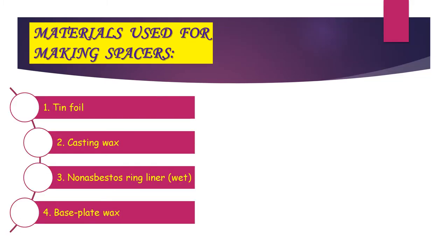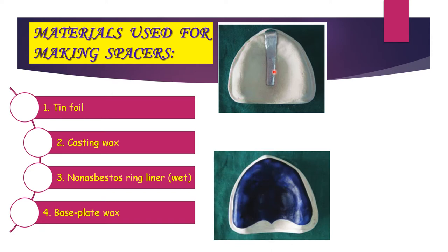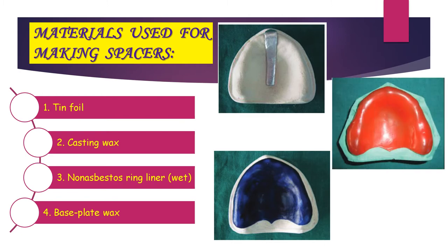The next topic is the materials used for making spacers. First is tin foil, as recommended by Roy McGregor, in the region of the incisive papilla and mid-palatine raphe. Next is casting wax, as recommended by Neil, in a thickness of 0.9 mm, to be adapted all over except the PPSA. Next is non-asbestos ring liner or wet ring liner, where shellac is used for custom tray fabrication. Next is base plate wax, used as the spacer mostly when acrylic resin is used for custom tray fabrication. The most commonly used material for making a spacer is base plate wax.